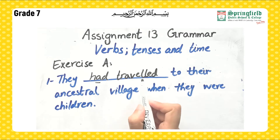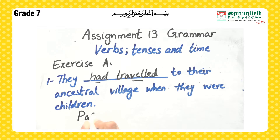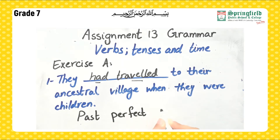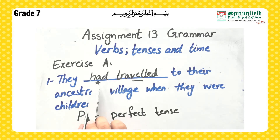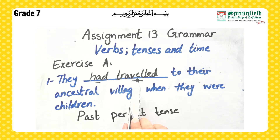The underlined verb is 'had traveled.' We have 'had' here and the third form of the verb. So what tense is this? This is basically past perfect tense. 'Had' indicates the perfect aspect and we have the third form of the verb, so it is past perfect.